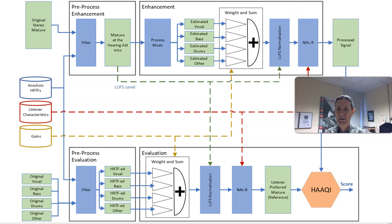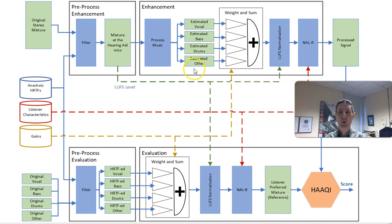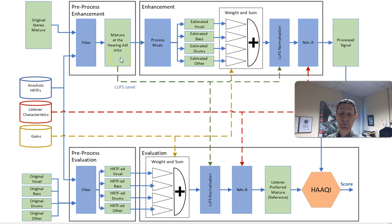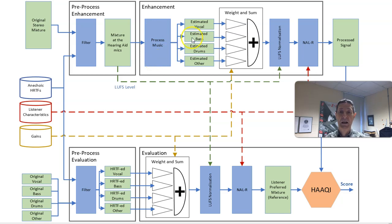It's quite a complicated diagram — let me move out of the way. Essentially, the top part is the enhancement block you're working on, and the bottom is the evaluation. In green, we have signals: the original stereo signals at the loudspeaker. A filtering process accounts for sound propagating from the loudspeakers to the ear, giving us signals at the left and right microphones of the hearing aid. We then process that signal using a demixing process, splitting the left-right channels into vocals, bass, drums, and other — as is commonly done in demix challenges. We've used one of the standard models without retraining for at-ear signals, so you can undoubtedly beat our baseline just by doing that.